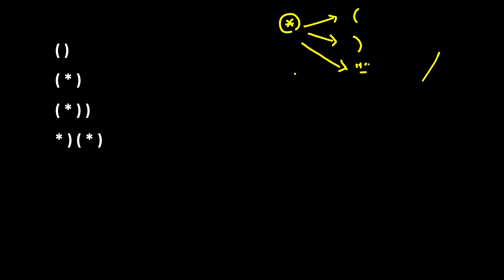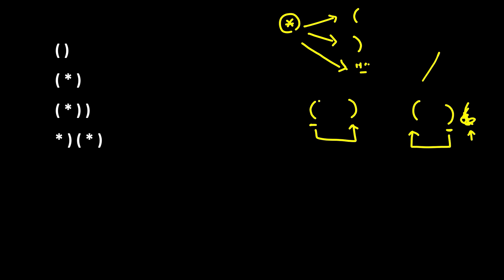For validity, every opening brace must have a corresponding closing brace that comes after it — you can't use a closing bracket that appears before an opening one. Similarly, for every closing bracket there must be a corresponding opening bracket before it. If there is no opening bracket, you are allowed to convert an asterisk to an opening bracket to balance the string.